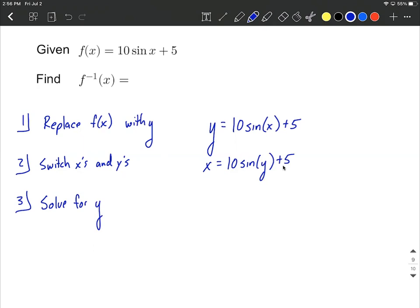The first thing I want to move to the other side is the 5. So we're going to subtract 5 from both sides. That'll leave us with 10 times the sine of y over on the right hand side. And those are connected with multiplication.